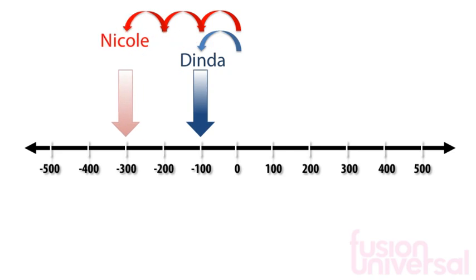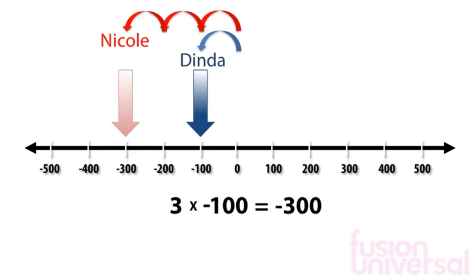In steps of 100, Dinda's debt is one step and Nicole's debt is three steps. This shows that three lots of negative 100 is negative 300. In other words, three times negative 100 is equal to negative 300.